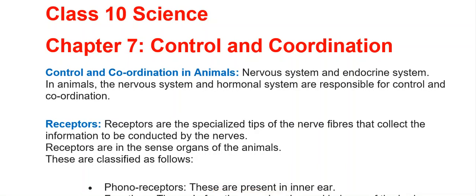CBSE Class 10 Science Notes, Chapter 7: Control and Coordination. In animals, the nervous system and hormonal system are responsible for control and coordination.